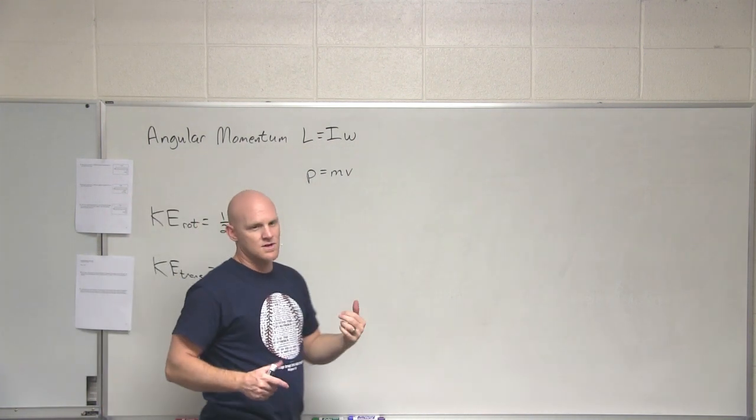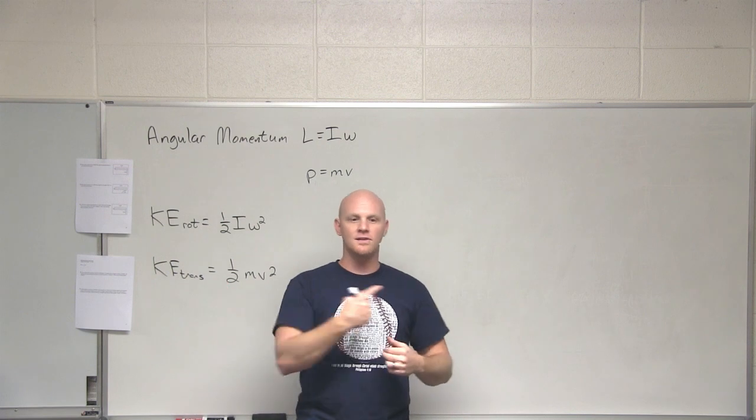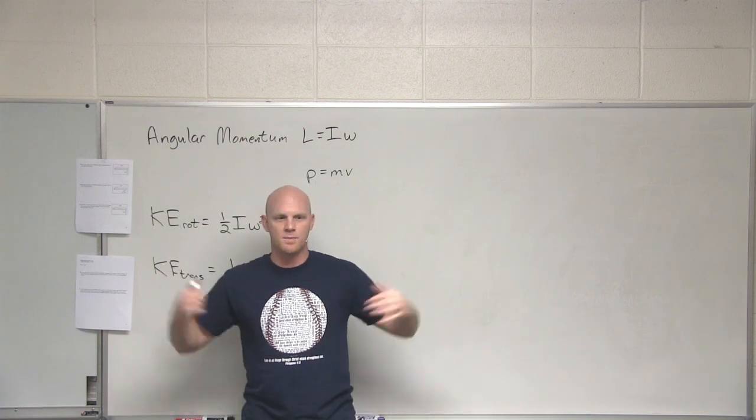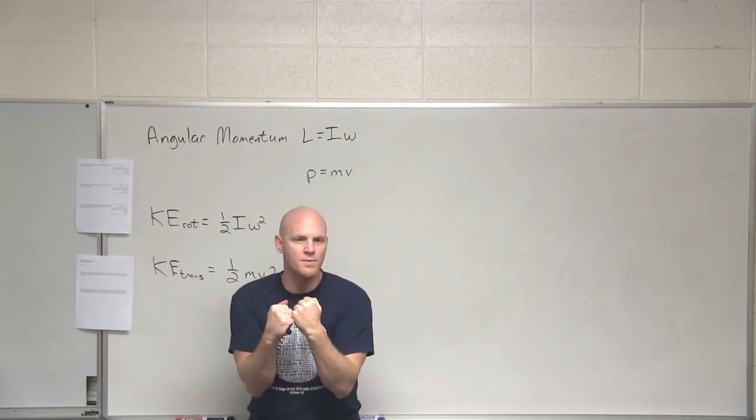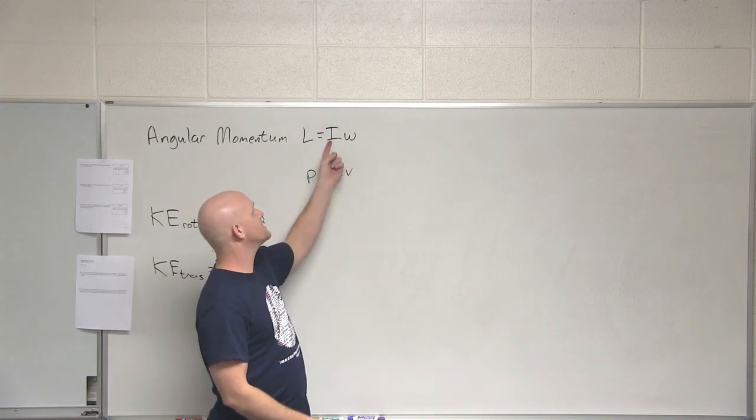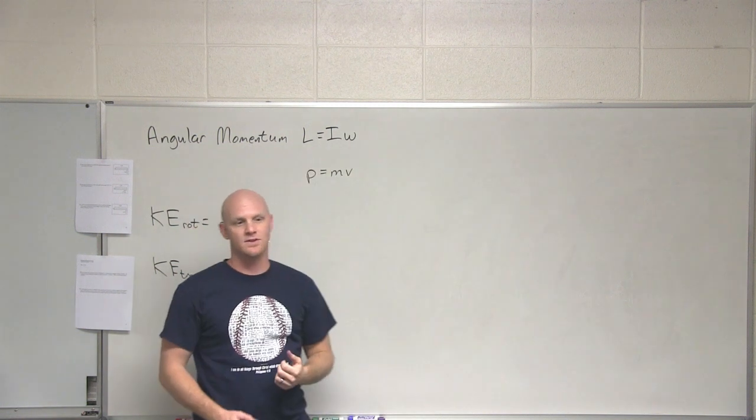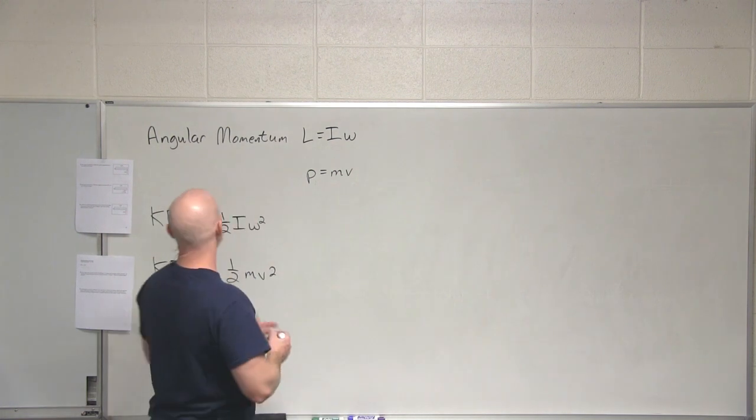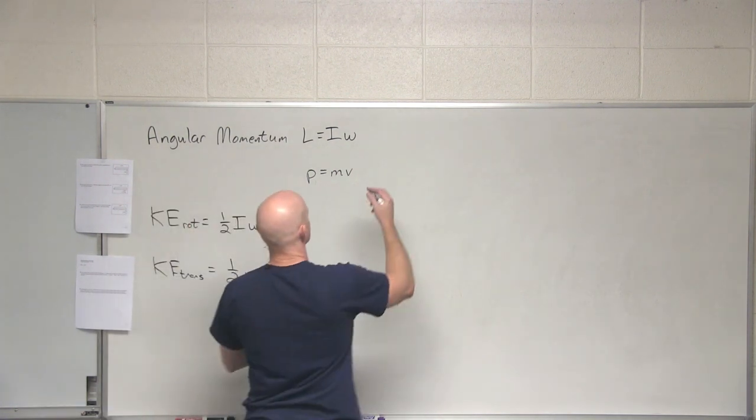This is why the ice skater, if they start spinning at constant angular velocity, but they crouch in, they lower their moment of inertia, and if they lower that moment of inertia for conservation of angular momentum, they're going to increase their angular velocity. And that's what question number eight is going to deal with here.